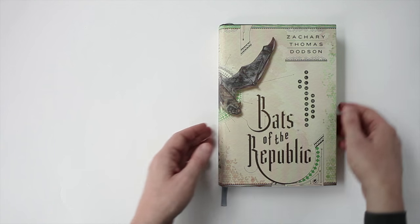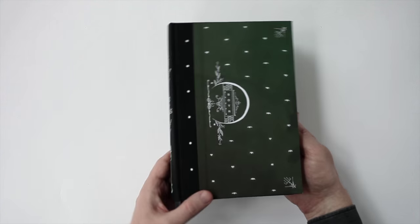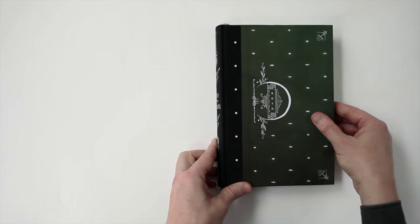Hi, my name is Zachary Thomas Dodson. Bats of the Republic is a book I wrote and designed.